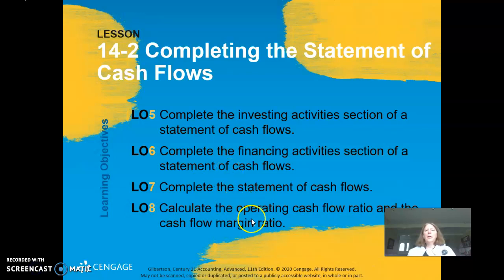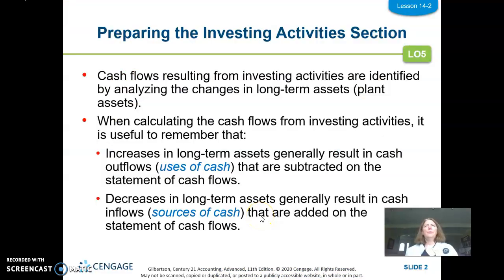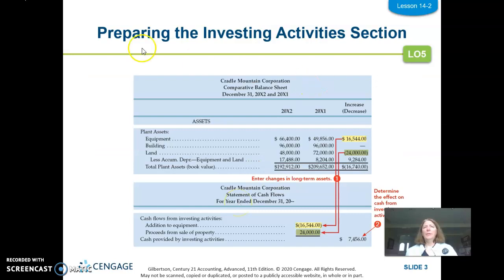We're also going to look at some cash flow ratios. This whole slide is pretty much just on that summary sheet. Again, an increase in an asset is a use. A decrease in an asset is a source. So we'll be preparing the investing activities section of the statement of cash flow.